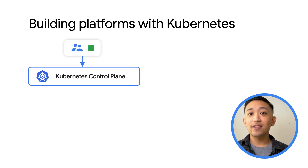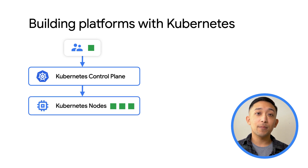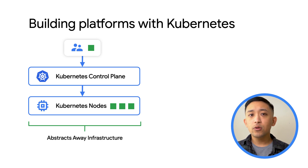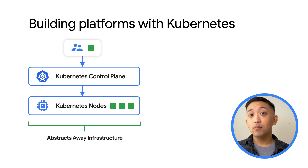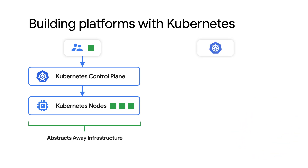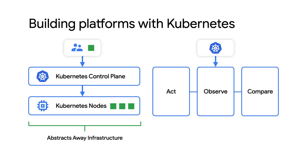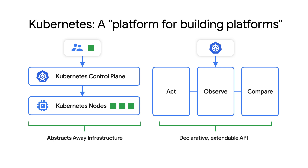Kubernetes especially shines for those of you looking to build a platform to run your company's workloads. It gives you a means for abstracting away infrastructure — no need to directly deploy workloads to a specific machine. Rather, you deploy it to the cluster and Kubernetes will make sure it runs somewhere. It also gives you declarative APIs that codify a workload's characteristics and enforce that behavior. You can even extend these APIs with your own definitions of how workloads should run. This is why one of the founders of Kubernetes went as far as calling the open source technology a platform for building platforms.